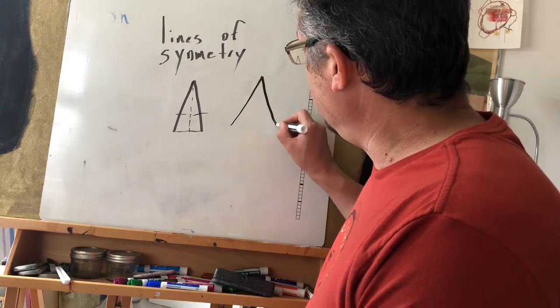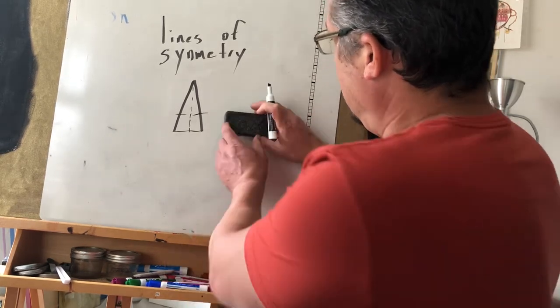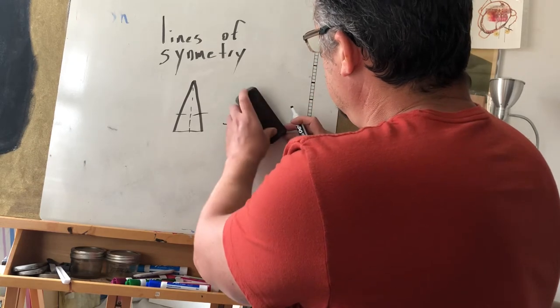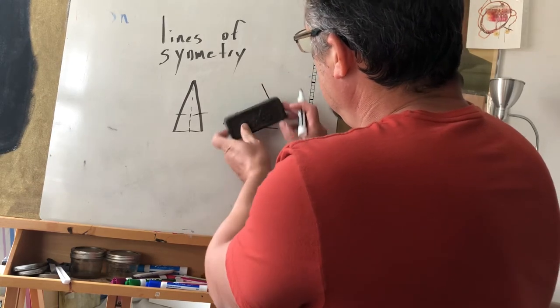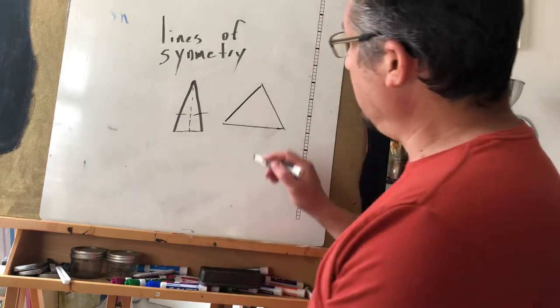And then if I have an equilateral triangle - oops, this isn't very equilateral but I'll do it here. Oh, you know, I'll try to use this as the sides. I think that's a little better. Okay, so if I have an equilateral triangle, that means all three sides are equal.